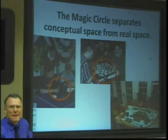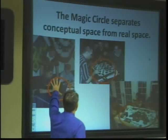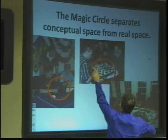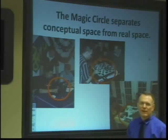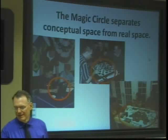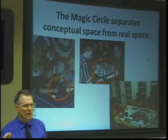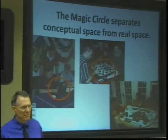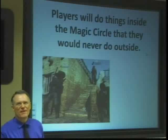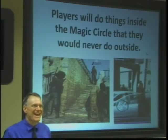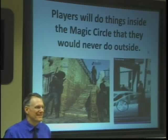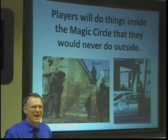Huizinga conceived of something called the magic circle — these red circles separating the actual space from the play space, the space in which players occupy as they're playing. Players will do things inside the magic circle that they would never do outside it, like ambush a sheriff or carjack a car. When you're playing a game and you enter this magic circle, you can do things you wouldn't or couldn't do in real life. It's interesting to explore how people behave in ways they never would in reality.